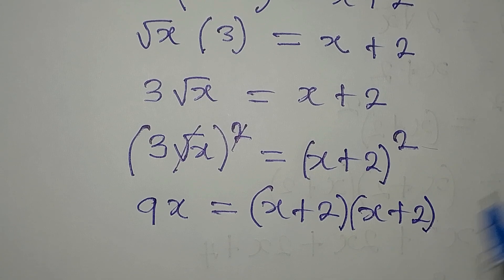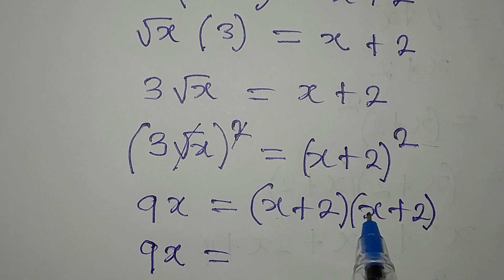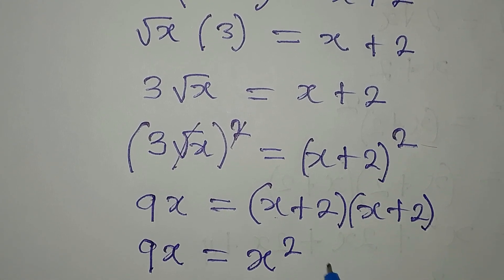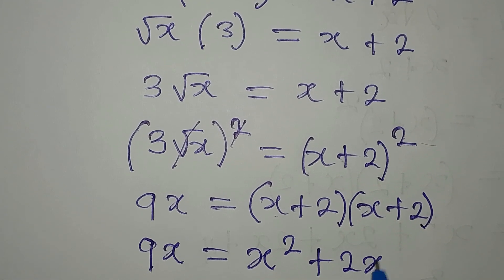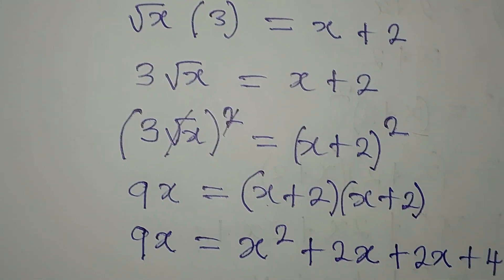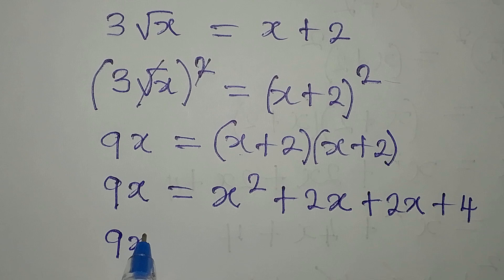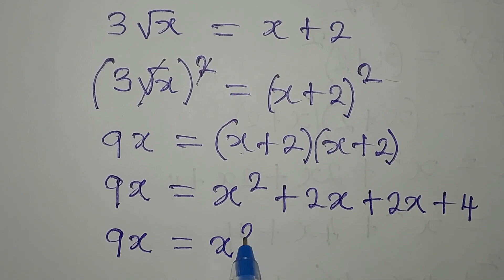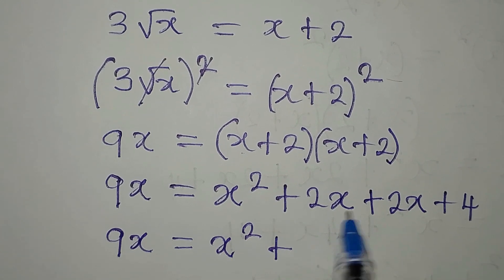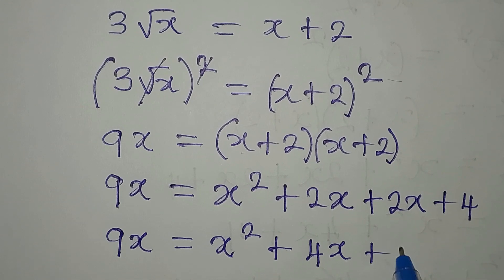Expanding (x plus 2) squared: x times x is x squared, x times 2 is plus 2x, 2 times x is plus 2x, and 2 times 2 is plus 4. So we have 9x equals x squared plus 4x plus 4.